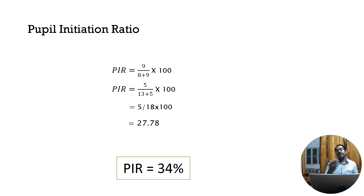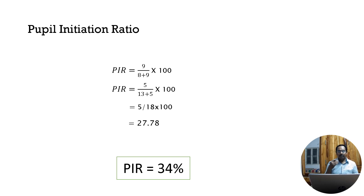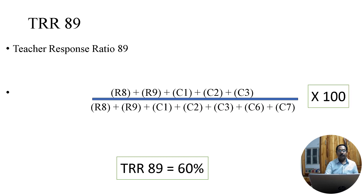Category 9 represents student initiation — where the student spontaneously answers. PAR is calculated as the tally in category 9 divided by the two student categories (8 and 9), made into a percentage. Our example gives 27.78%, while the normative value given by Flanders is 34%.